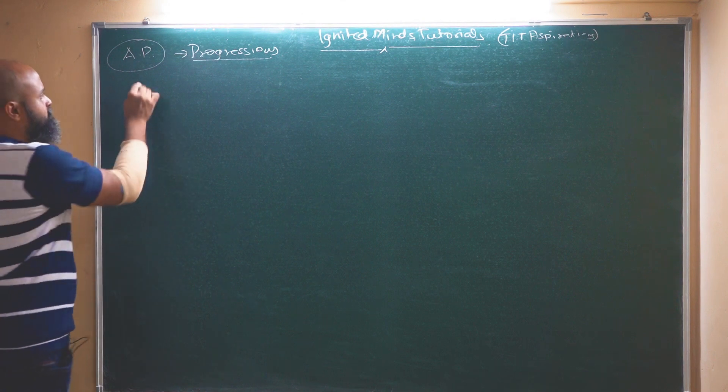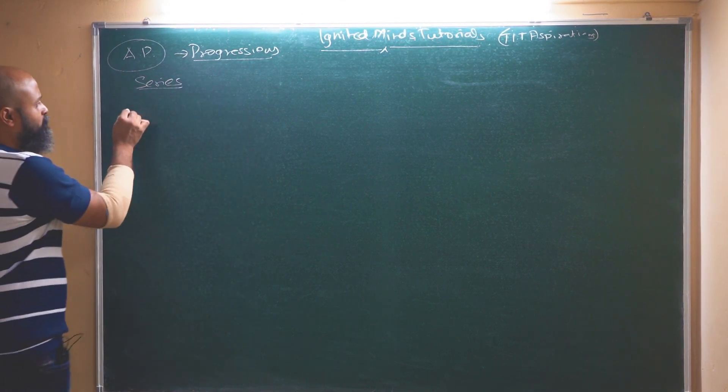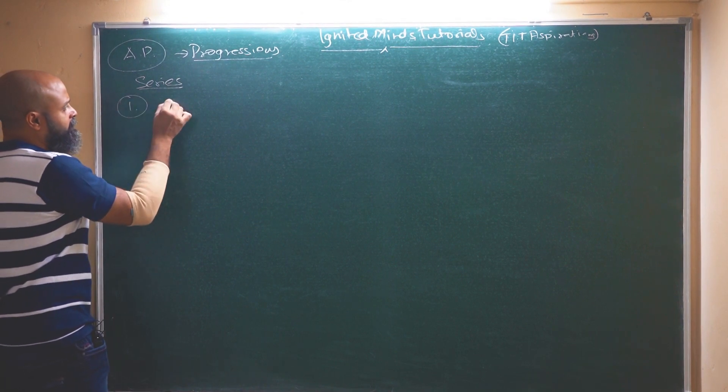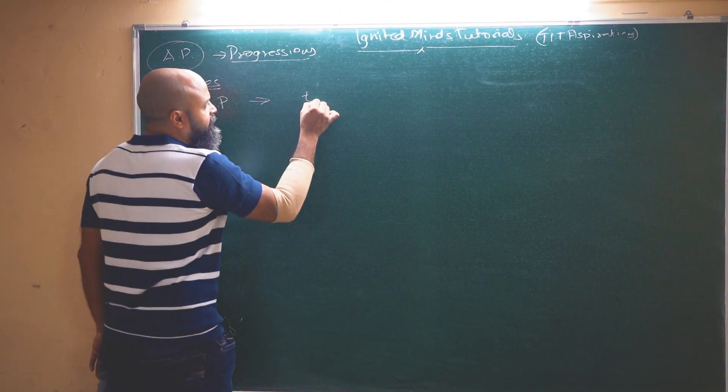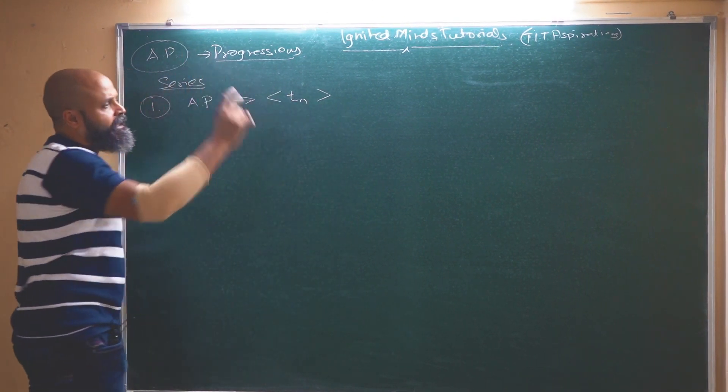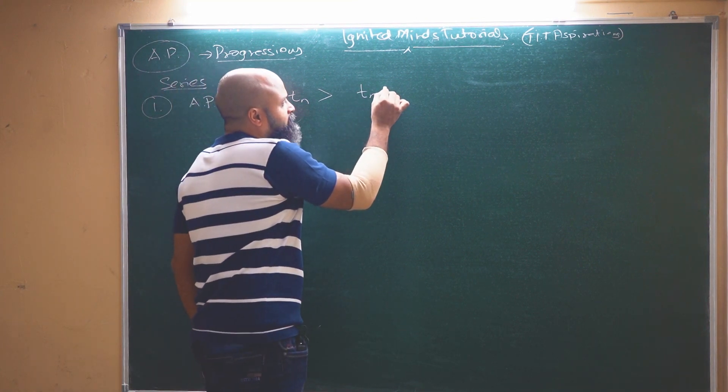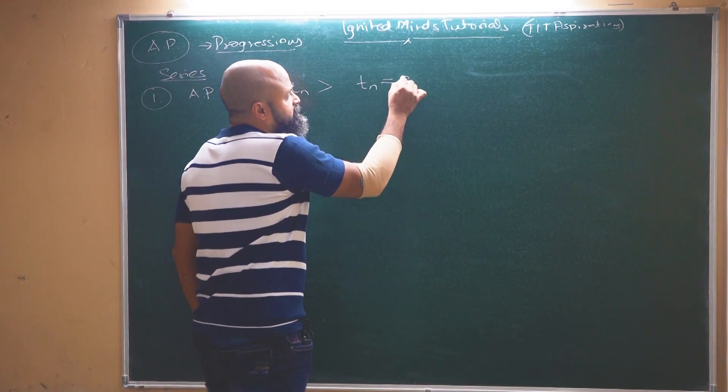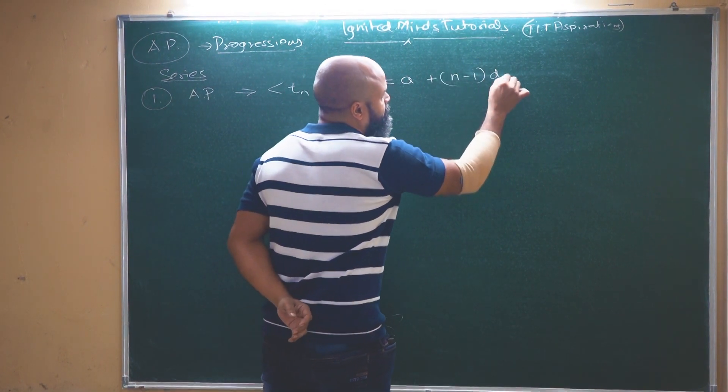This is basically a series in which we will have a first term. So how do we define an arithmetic progression? An arithmetic progression basically is defined in terms of tn. This tn actually means a term of the arithmetic progression which is dependent on the first term and on the common difference.